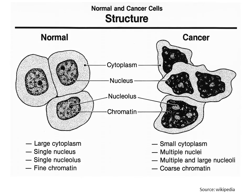From this figure we can understand the differences between normal cells and cancer cells. Normal cells are elliptical or round in shape, but cancer cells are irregular in shape and size. Normal cells have a larger amount of cytoplasm around the nucleus, but in cancer cells the cytoplasm is reduced. The nucleus in normal cells is single with a spheroid shape, but in cancer cells there are multiple nuclei in irregular shapes. Fine chromatin is present in normal cells, whereas coarse chromatin is present in cancer cells. Normal cells grow in a controlled manner, but cancer cells grow in an uncontrolled fashion.